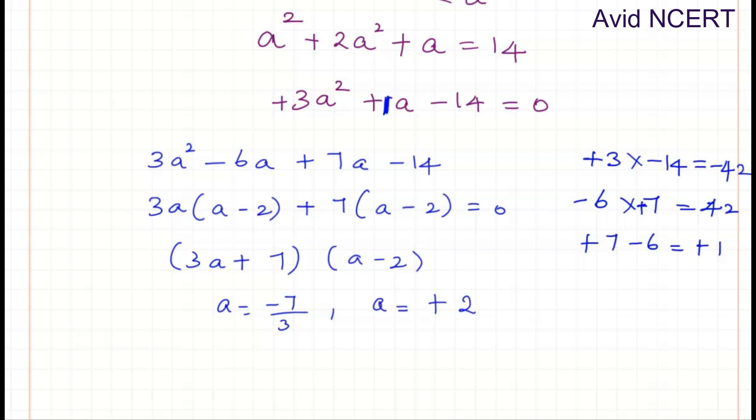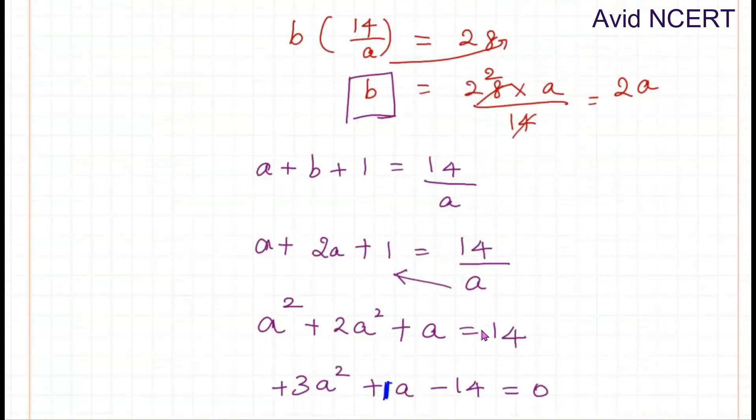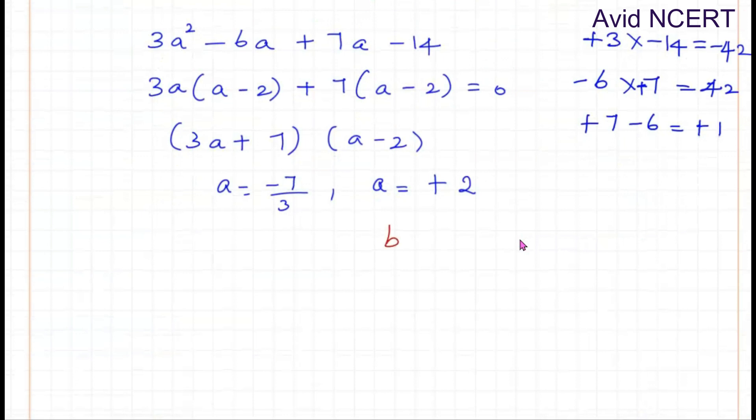We have the values of A and B where A is positive 2 and B is 2A. B equals 2 times 2, which equals 4. So A equals 2 and B equals 4. Since this is negative we can ignore this.